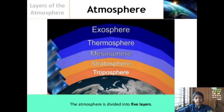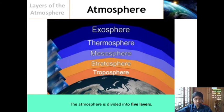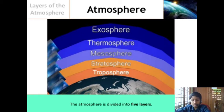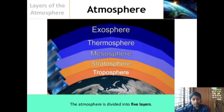The five layers are: troposphere, stratosphere, mesosphere, thermosphere, and exosphere. I repeat — the atmosphere is divided into five layers: troposphere, stratosphere, mesosphere, thermosphere, and exosphere.